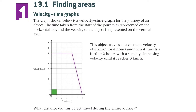Chapter 13, 13.1, Finding Areas: Velocity Time Graphs. The graph shown below is a velocity time graph for the journey of an object. The time taken from the start of the journey is represented on the horizontal axis — time is normally on the horizontal axis — and the velocity of the object is represented on the vertical axis.